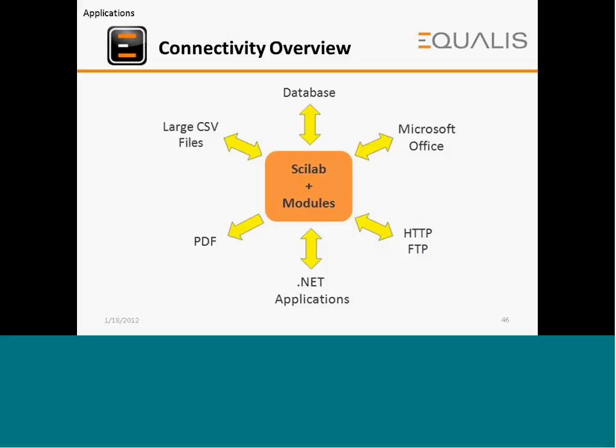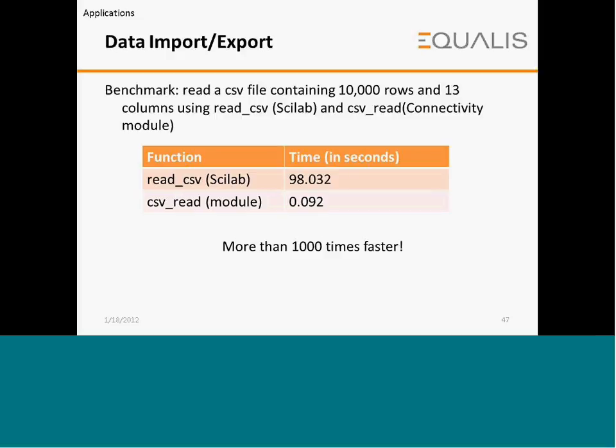SciLab and all its modules can connect with databases, .NET applications, MS Office, HTTP, FTP, and can also handle large CSV files. For data import-export, the connectivity module in SciLab is a thousand times faster compared to the standard read CSV function. For example, reading a CSV file with 10,000 rows and 13 columns: using the standard read CSV takes 98 seconds, while the connectivity module's CSV read function completes the task in significantly less time.